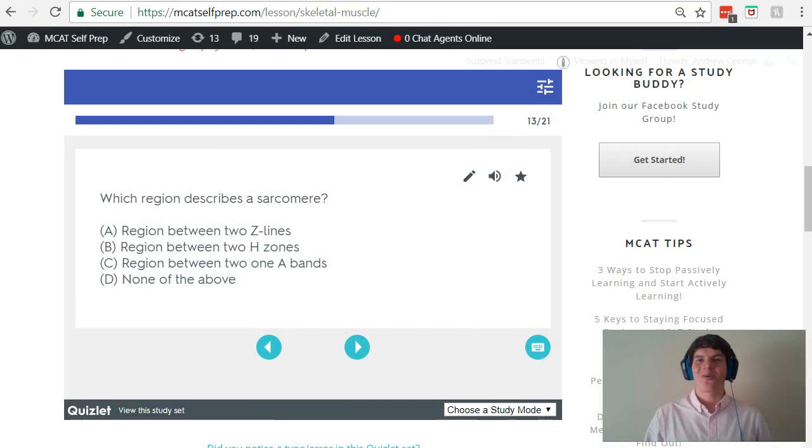Now let's take a second look at our question stem. Which region describes a sarcomere? Remember, it's going to be between the two Z-lines because the Z-line marks the end of a sarcomere. So if you went from one Z-line to the next, that would entail an entire sarcomere. Therefore, the correct answer here is answer choice A.